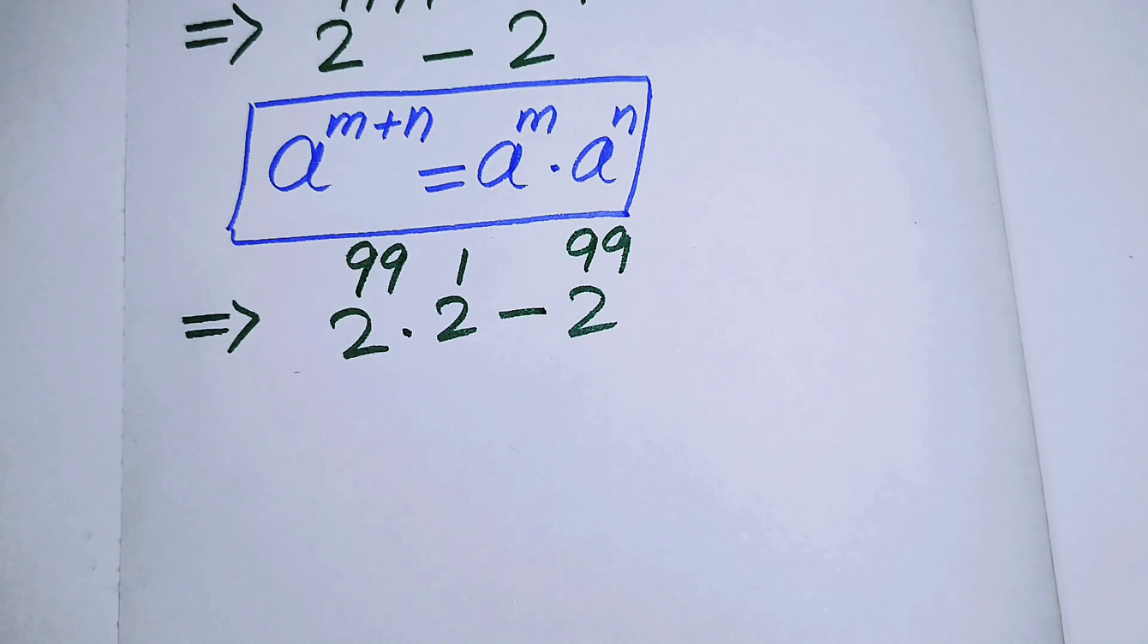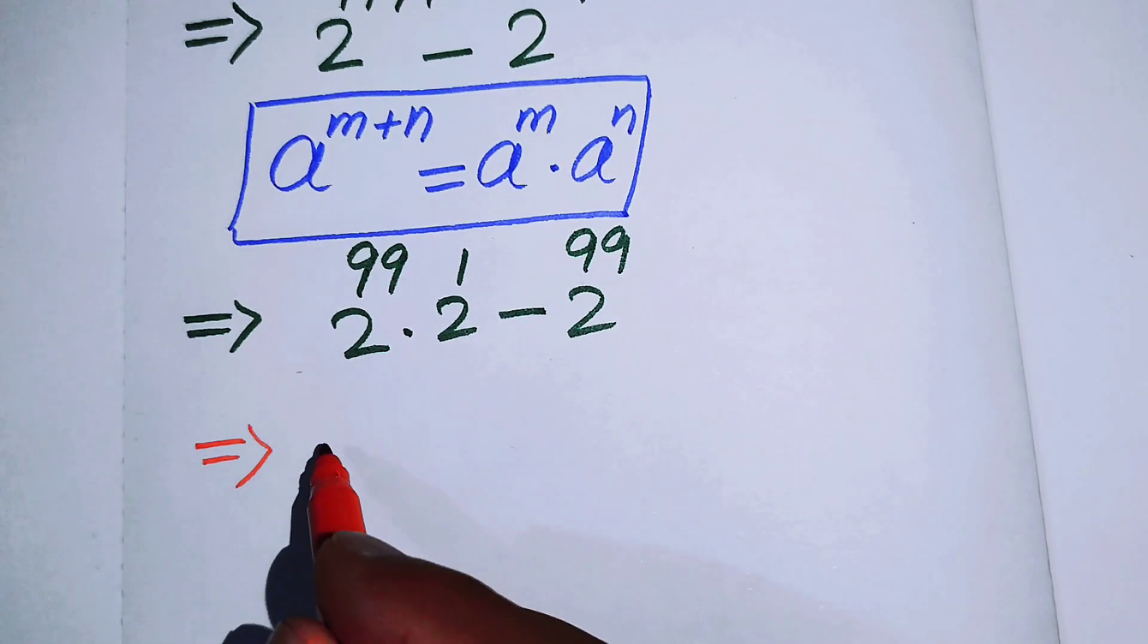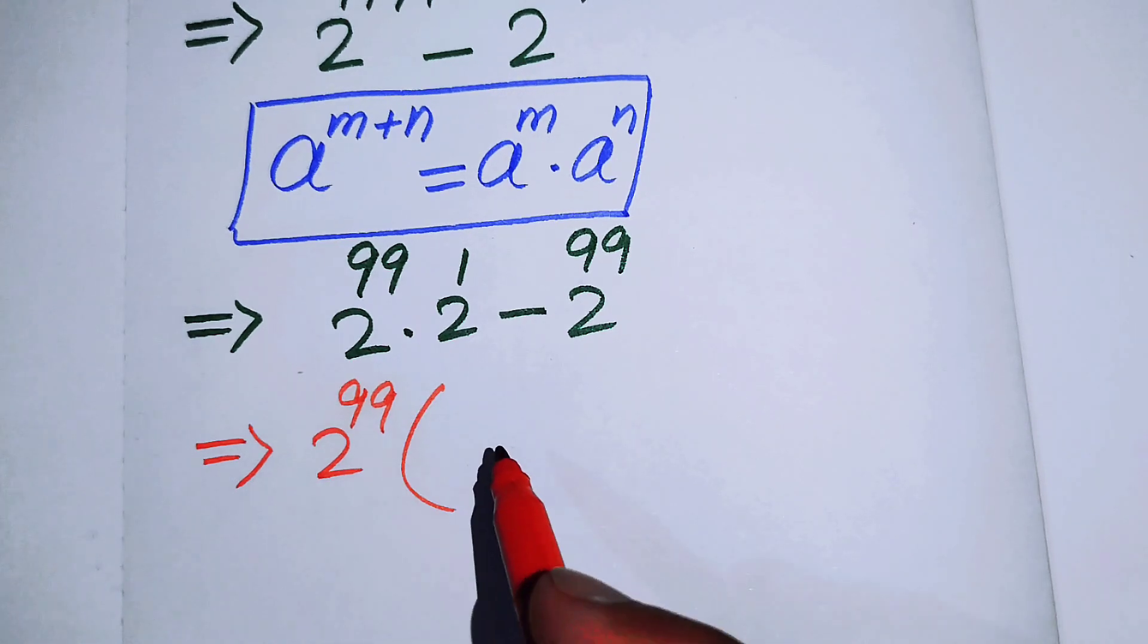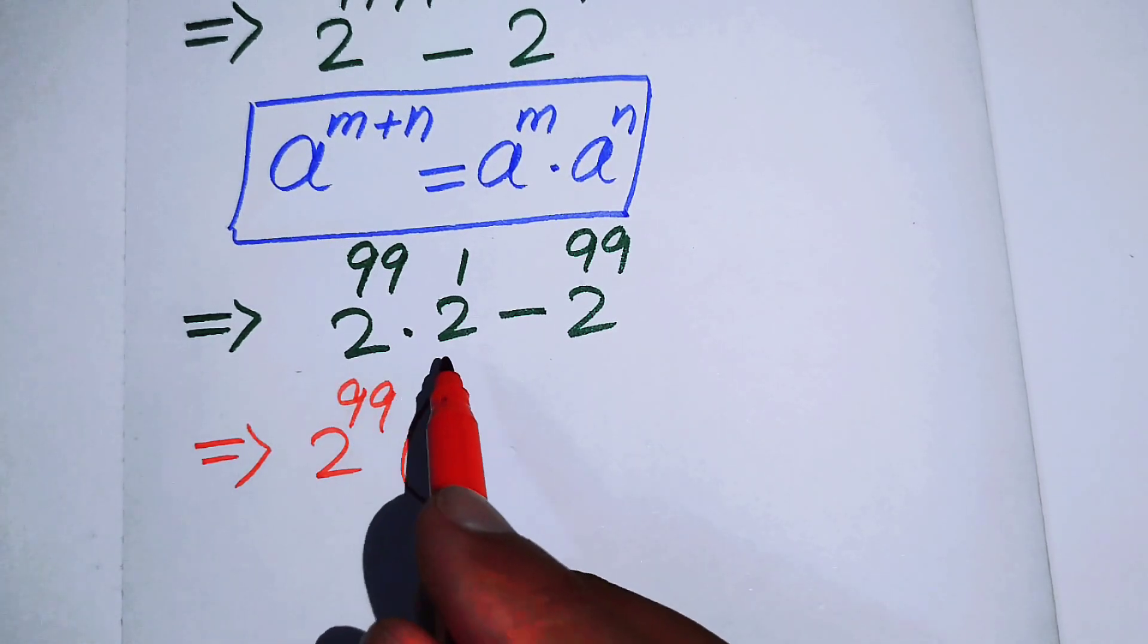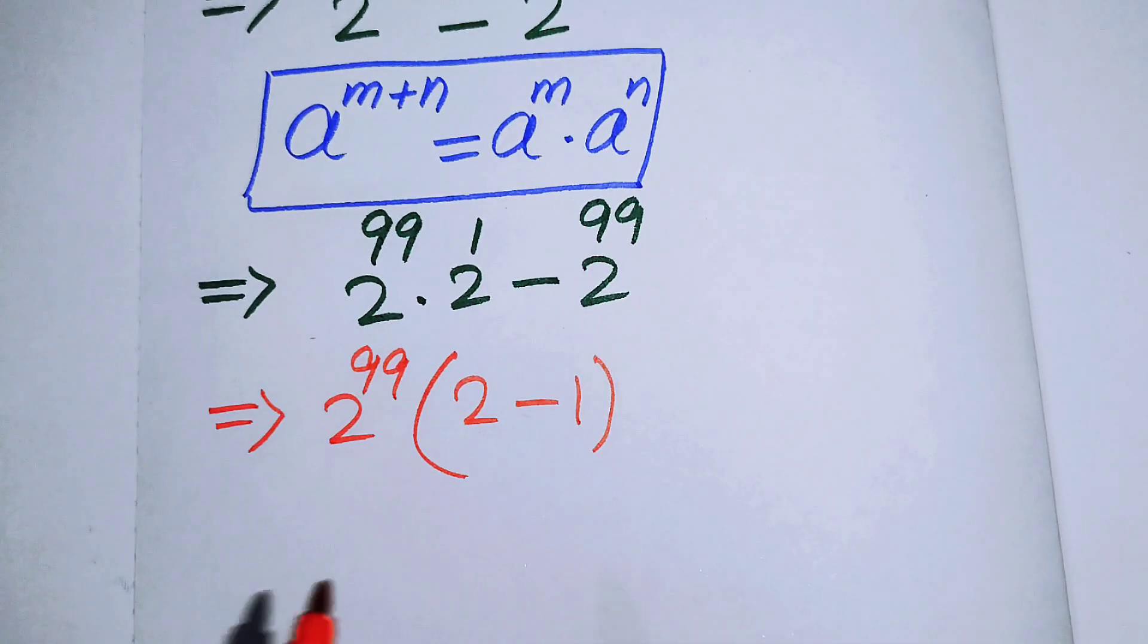So we will take common 2 to the power of 99 here, and you will get 2 minus 1.